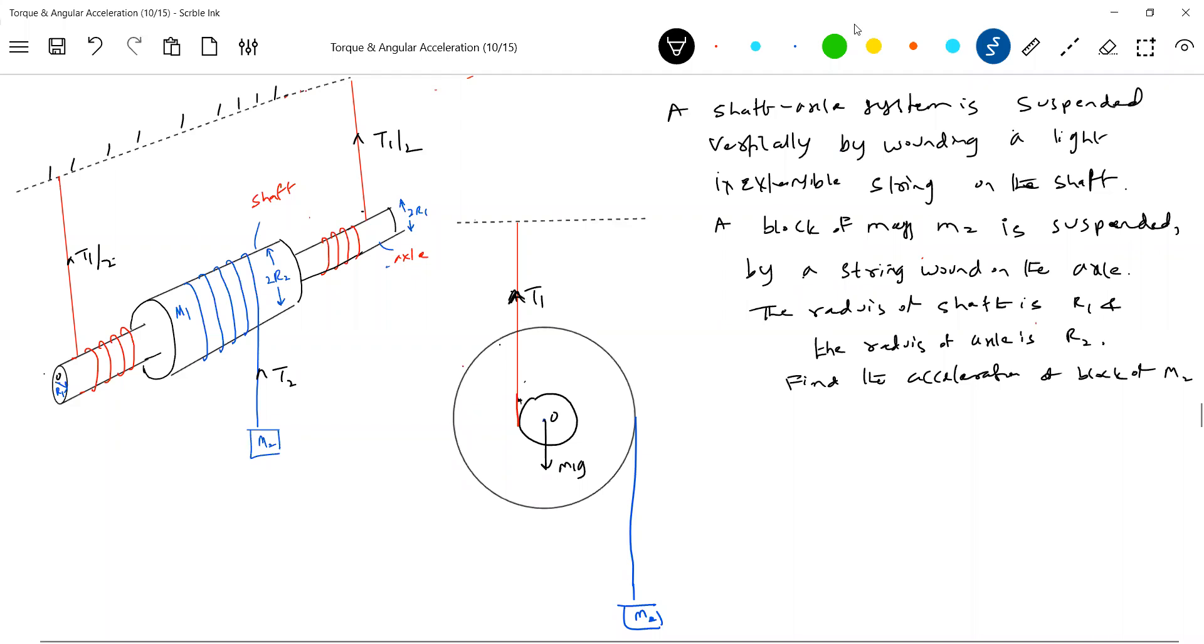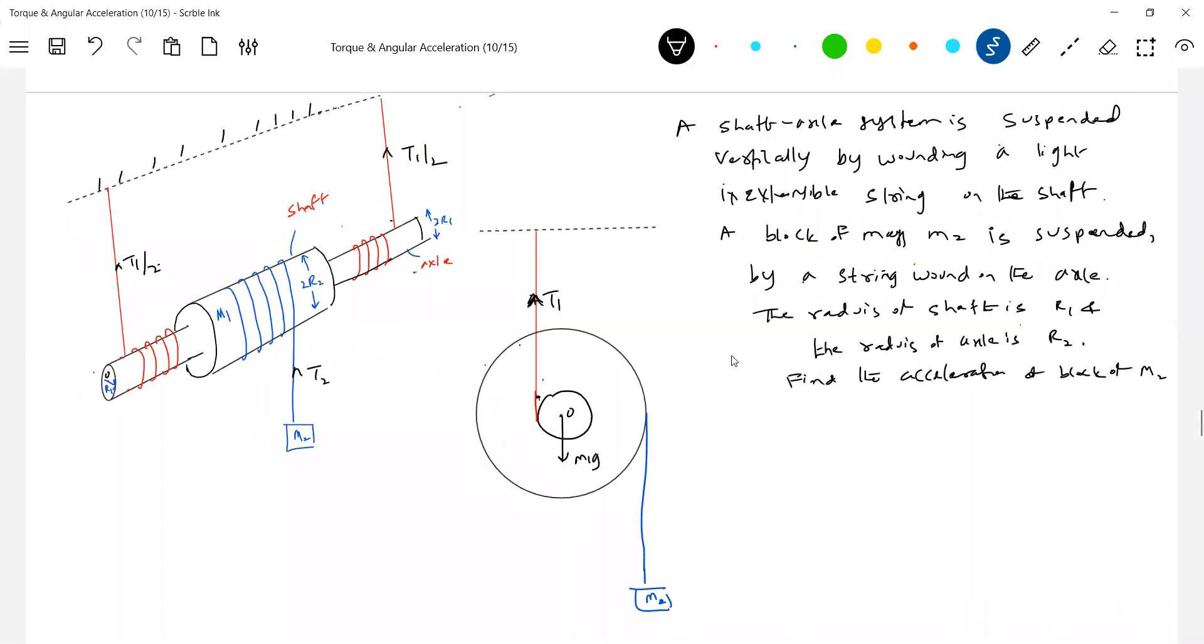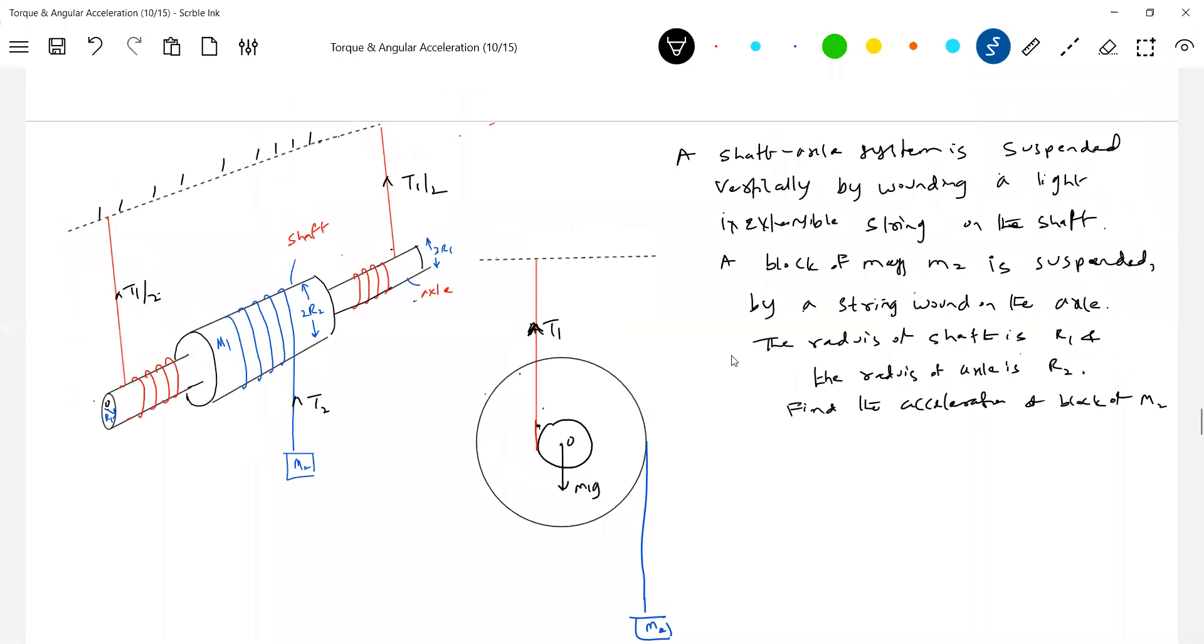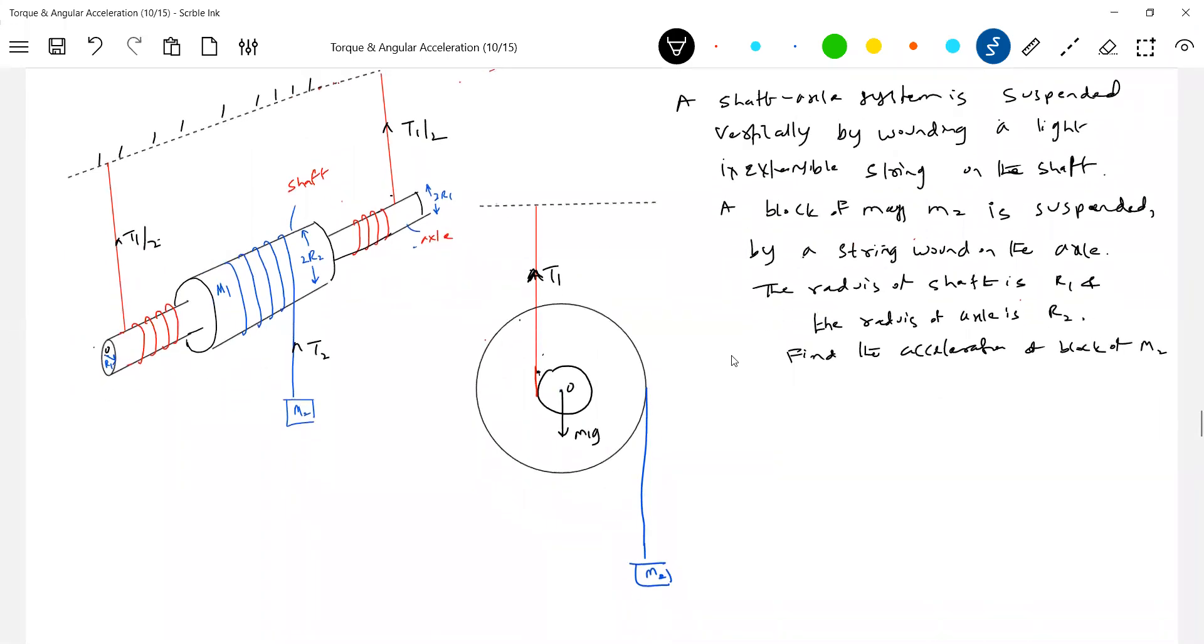The weight M1G will act. Here the weight M2G. Now, now you take T2. Tell me what will happen to this. This will move down. What will happen to this shaft axle system? It will only rotate or it will also translate down. It will also translate down. It will have rotation. Alpha 1. And also, it will accelerate down.